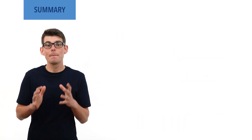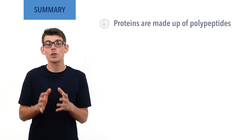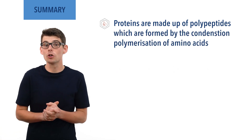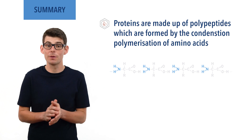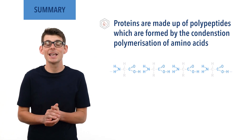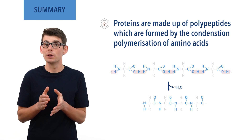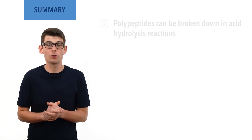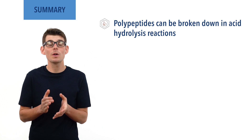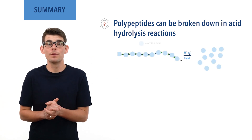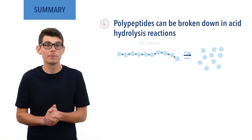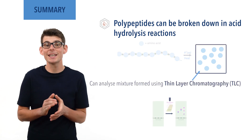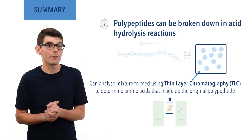So to summarize: proteins are formed by polypeptides, which are formed from the condensation polymerization of amino acids. An amine group in one amino acid can form a peptide link with a carboxylic acid from another amino acid in a condensation reaction, and a molecule of water gets released. Polypeptides can be broken down into amino acids in acid hydrolysis, where the polypeptide is heated with aqueous acid. In nature, this process is achieved using enzymes. Once hydrolyzed, the mixture formed can be analyzed using thin layer chromatography to identify the amino acids present in the protein based on their RF values.